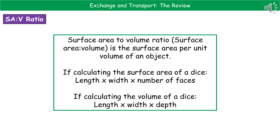There are two ways it might be written: it could be written with the full words, or it could be written like the ratios you see in maths with a little colon between the two. What we're actually referring to when we talk about the surface area to volume ratio is the surface area per unit volume of an object.